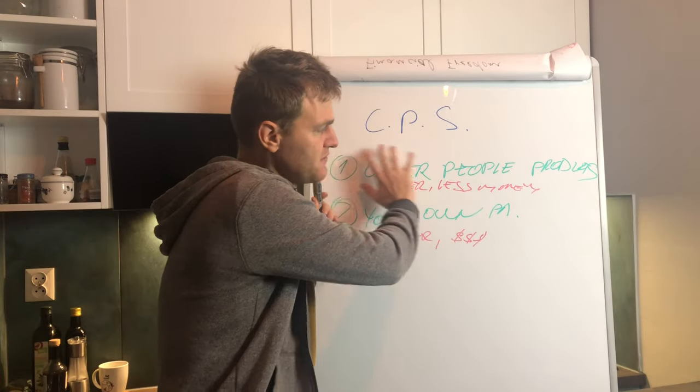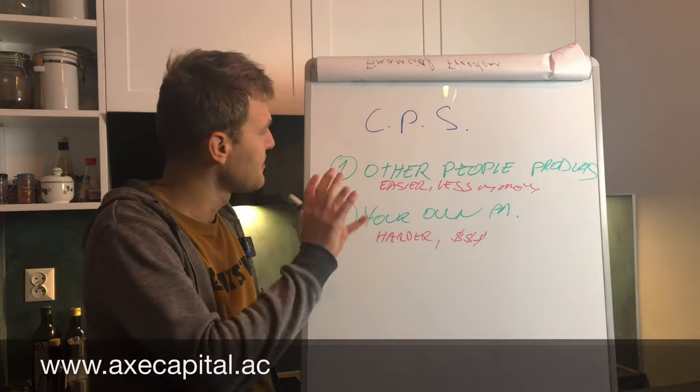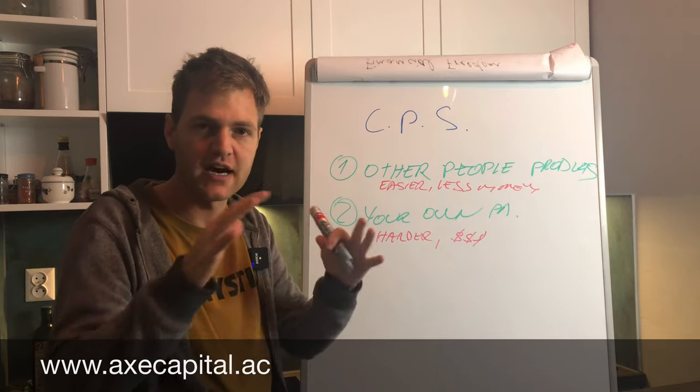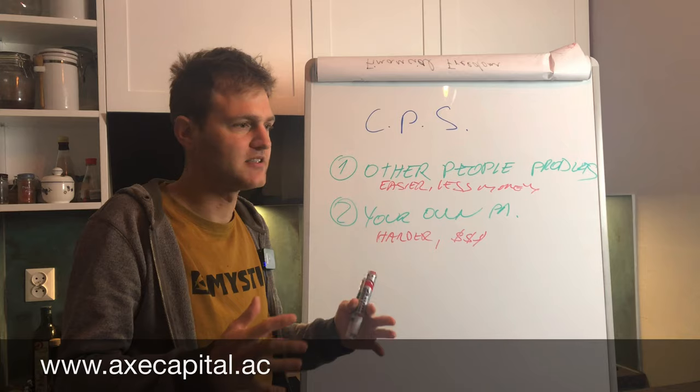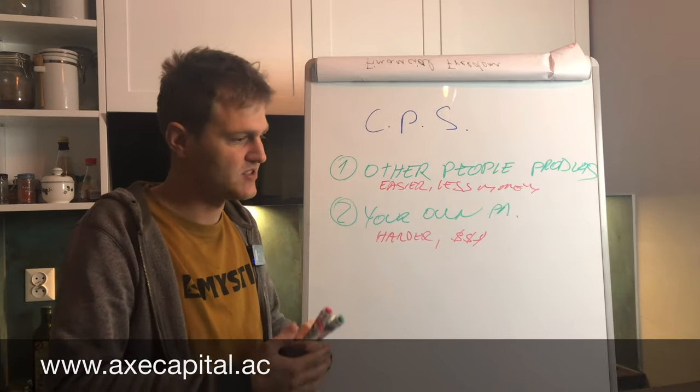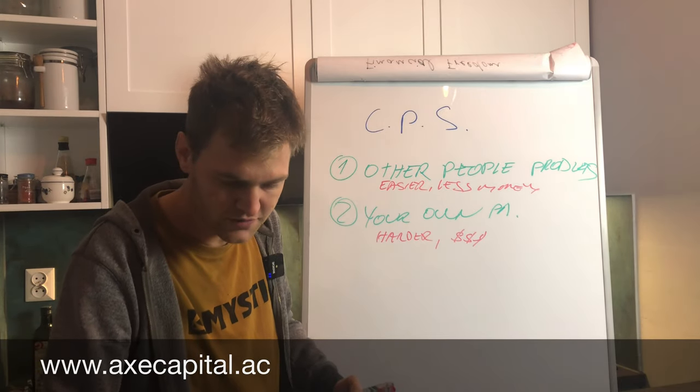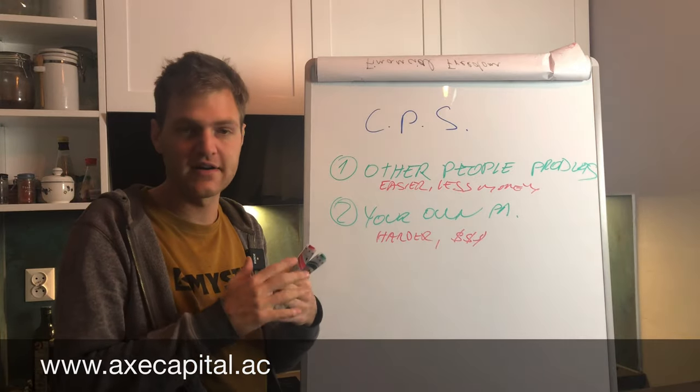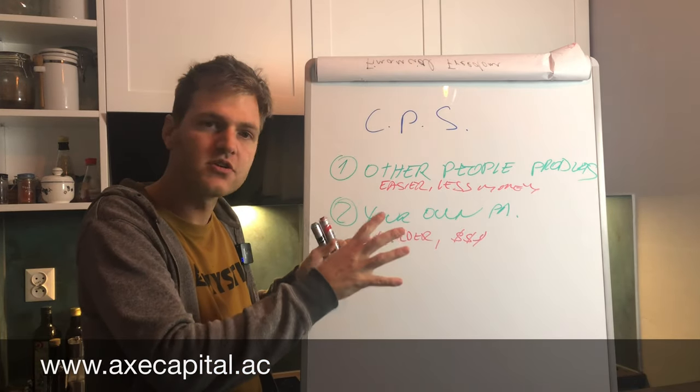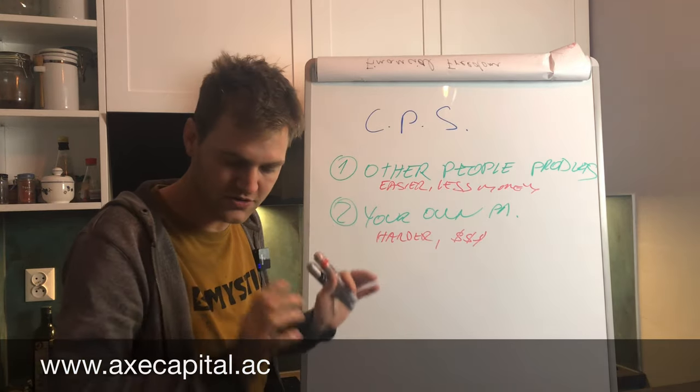First minimum first 12 months you should focus just on other people products and I will give you some examples. For example Amazon when Jeff Bezos started he was selling also other people products. After a while he started with streaming service, he started with groceries, he started with Amazon web services. It takes some time to build the products. Don't think you are smarter than Jeff Bezos. Start with other people products and after like one year when you start to make money just add your own products.